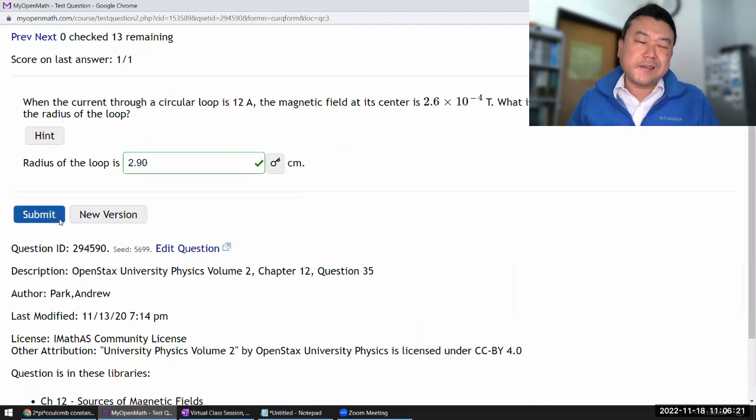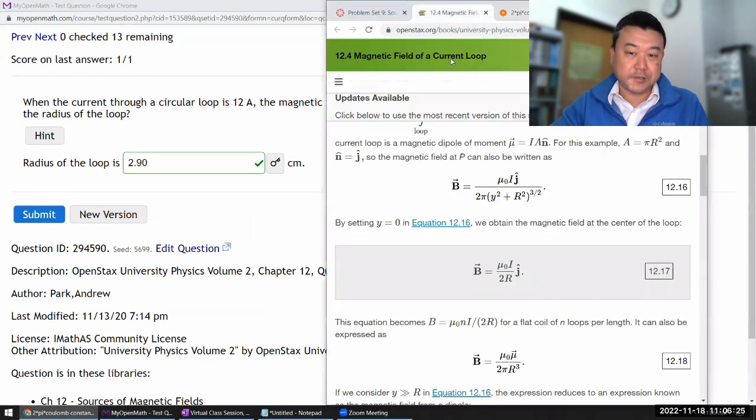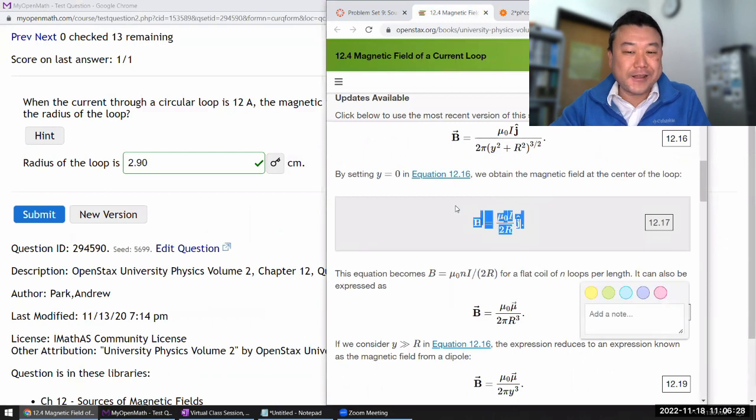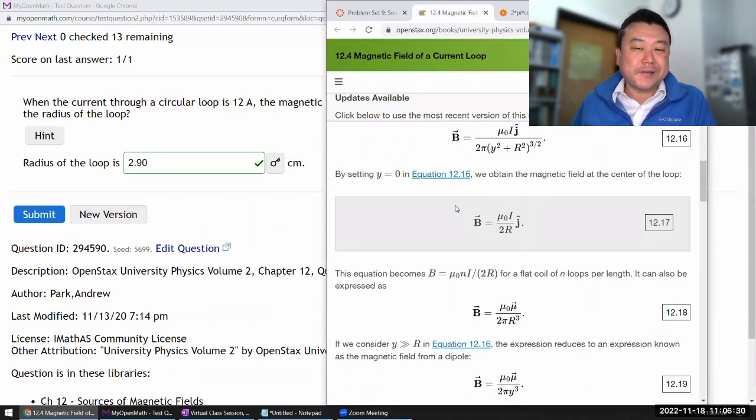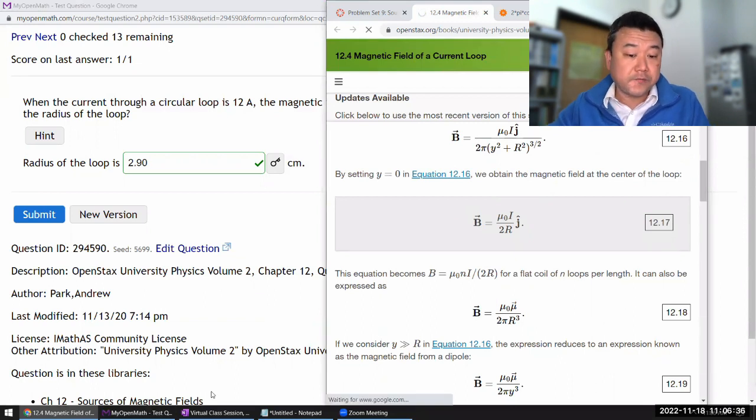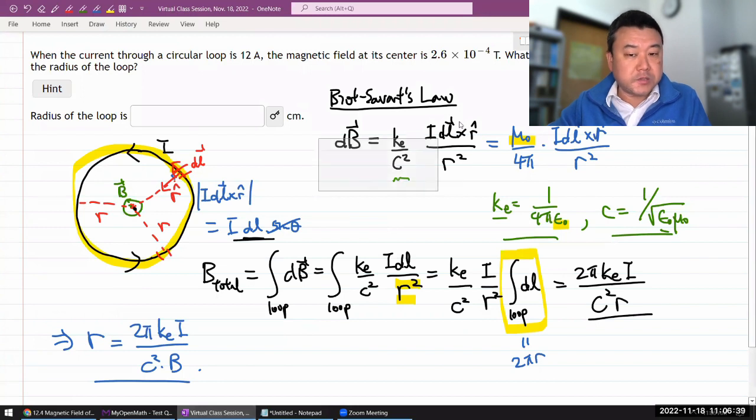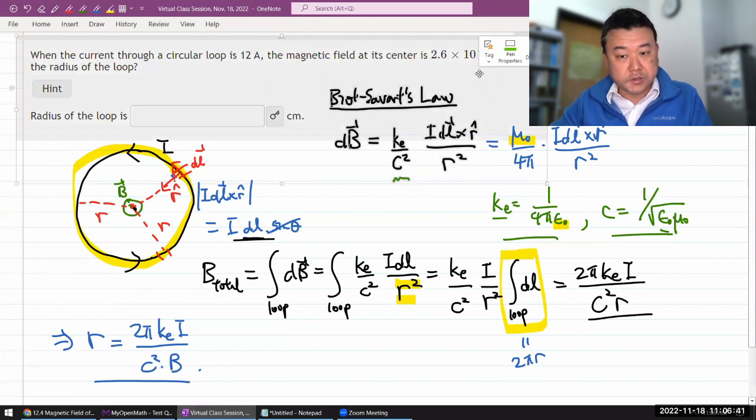So yeah, that's it. So again, you can look up the formula from the textbook. That's not prohibited, but I thought it would be more instructive to go through the derivation starting from the basic first principles law, which is Biot-Savart's law.